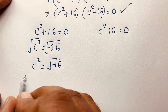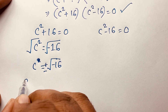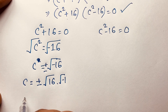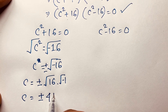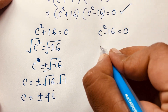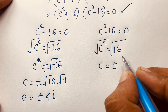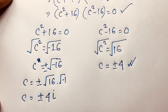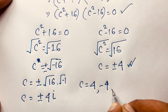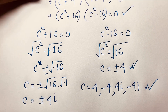For c squared equals negative 16, using complex number rules, c equals plus or minus the square root of negative 16, which is plus or minus the square root of 16 times the square root of negative 1. Since the square root of negative 1 equals i, we get c equals plus or minus 4i. So combining both cases, c equals plus or minus 4 and plus or minus 4i — these are our four roots.